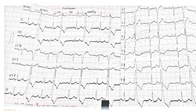Looking at lead II, we can see definite discrete P waves — there is no doubt about it. This means that sinus activity is ongoing. Each P wave is followed by a QRS complex with a normal PR interval, which confirms this patient is definitely in sinus rhythm.